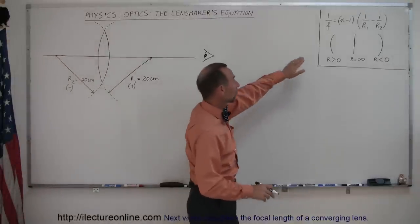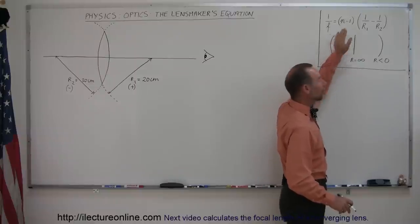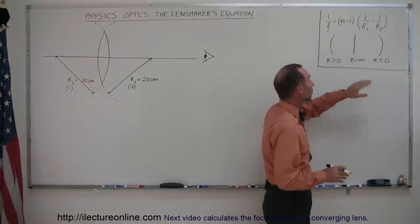And just for reference I put the equation up here. 1 over the focal length of the lens is equal to n, n being the index of refraction of the lens, minus 1.